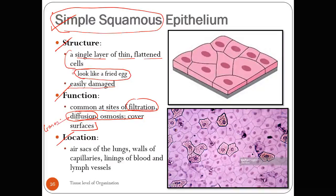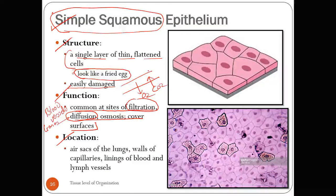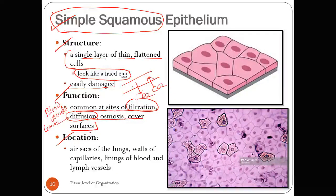Diffusion of gases usually happens in blood vessels. In a blood vessel, oxygen moves out and carbon dioxide moves in — this is simple diffusion. Wherever diffusion happens, you will find simple squamous epithelium lining that particular wall. Similarly, osmosis also occurs at such sites, and this epithelium also covers surfaces.